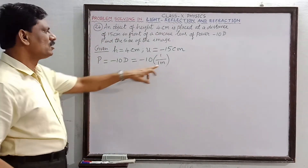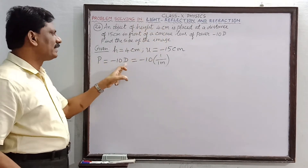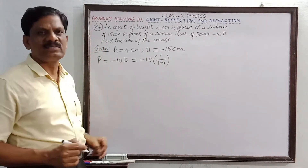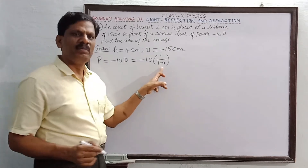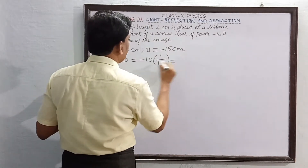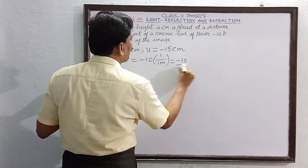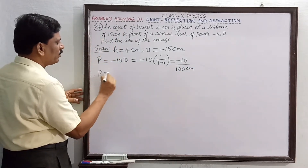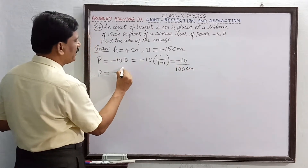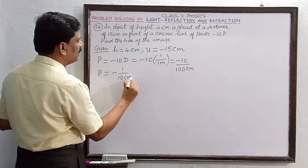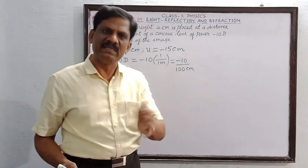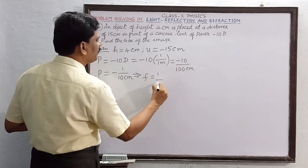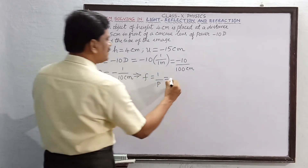Since 1 diopter equals the reciprocal of 1 meter, and 1 meter equals 100 centimeters, power minus 10 diopter is equal to minus 10 divided by 100 centimeter, which equals minus 1 divided by 10 centimeter. Therefore focal length is the reciprocal of power, so focal length equals minus 10 centimeter.